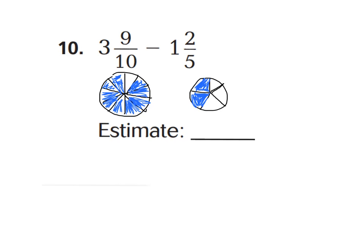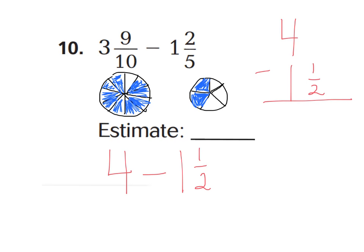Let's look at number ten. Number ten says three and nine-tenths minus one and two-fifths. I went ahead and drew a model for you to visualize what nine-tenths looks like. Nine-tenths is almost one-whole because there's only one-tenth left to shade in. Therefore, I'm going to estimate three and nine-tenths to be about four wholes. Now let's take a look at one and two-fifths — here's two-fifths. You can make an imaginary line going straight down the middle to show one-half, and two-fifths is really close to that imaginary line. So I'm going to call this one and one-half. So now I can subtract: four wholes minus one-and-a-half. Don't make the mistake of dropping down your one-half — you have to regroup. I'm going to borrow from my four wholes and make three wholes and two-halves, which still equals four wholes. Now subtract: two-halves minus one-half equals one-half, and three-wholes minus one-whole is two-wholes. So our estimated answer should be about two-and-a-half.